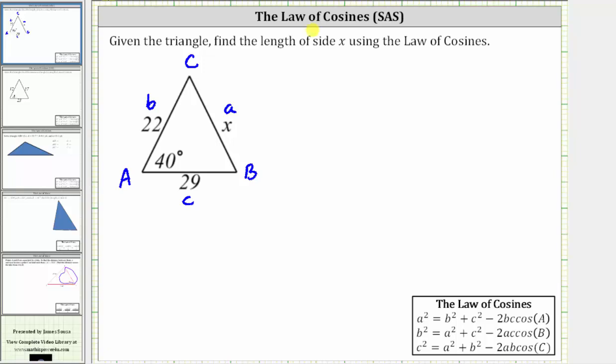So for our setup, we will use the equation a squared equals b squared plus c squared minus 2bc times cosine A. And now we substitute 22 for b, 29 for c, and 40 degrees for angle A.